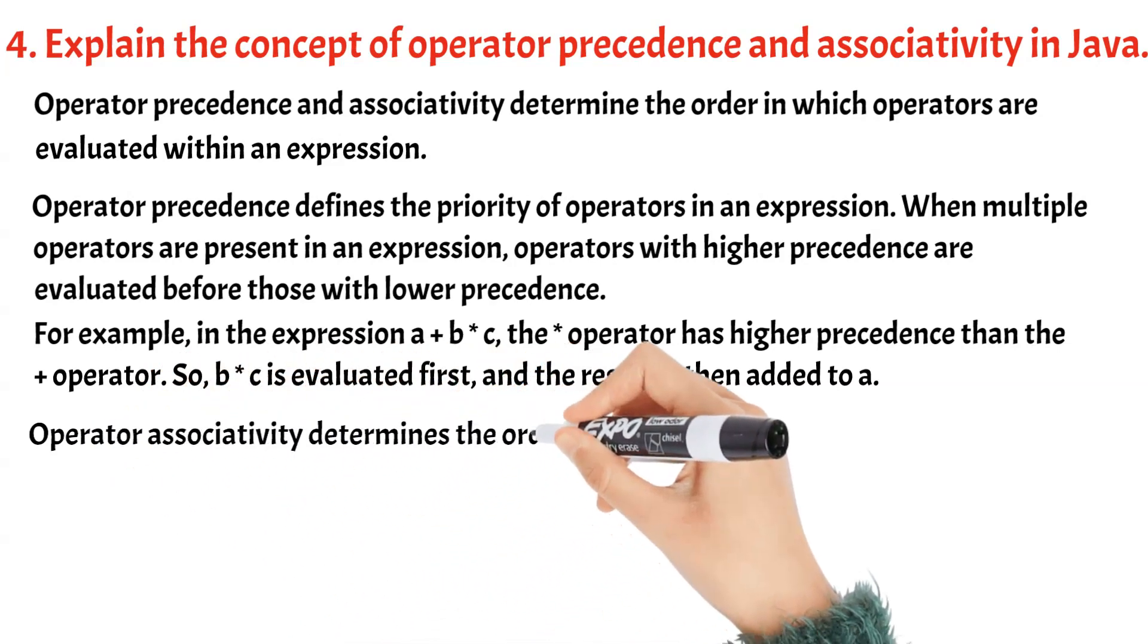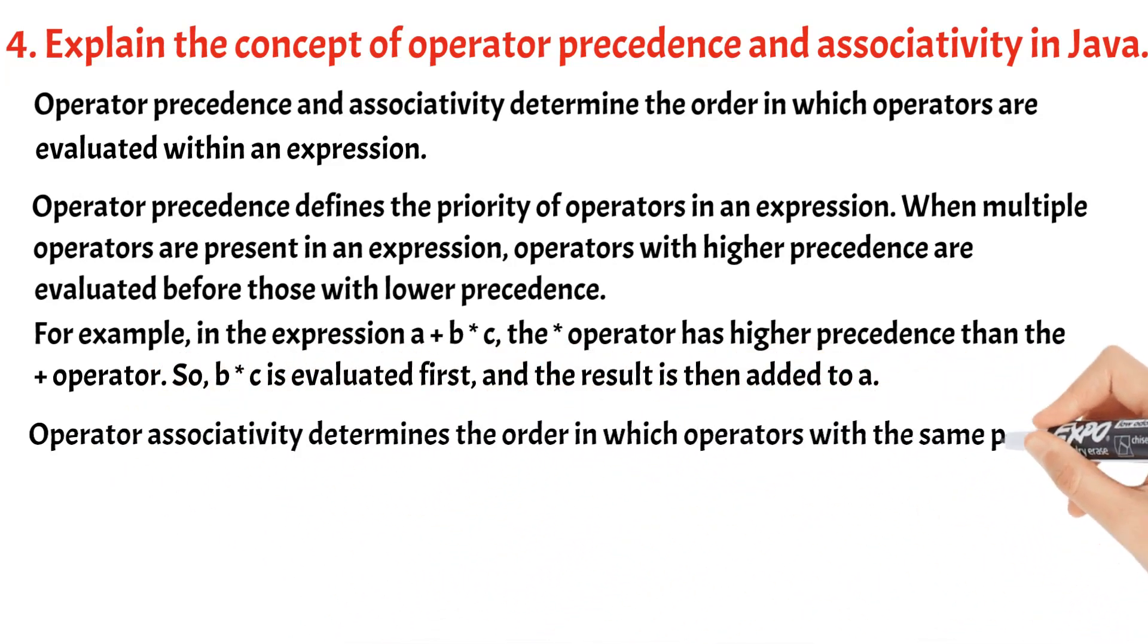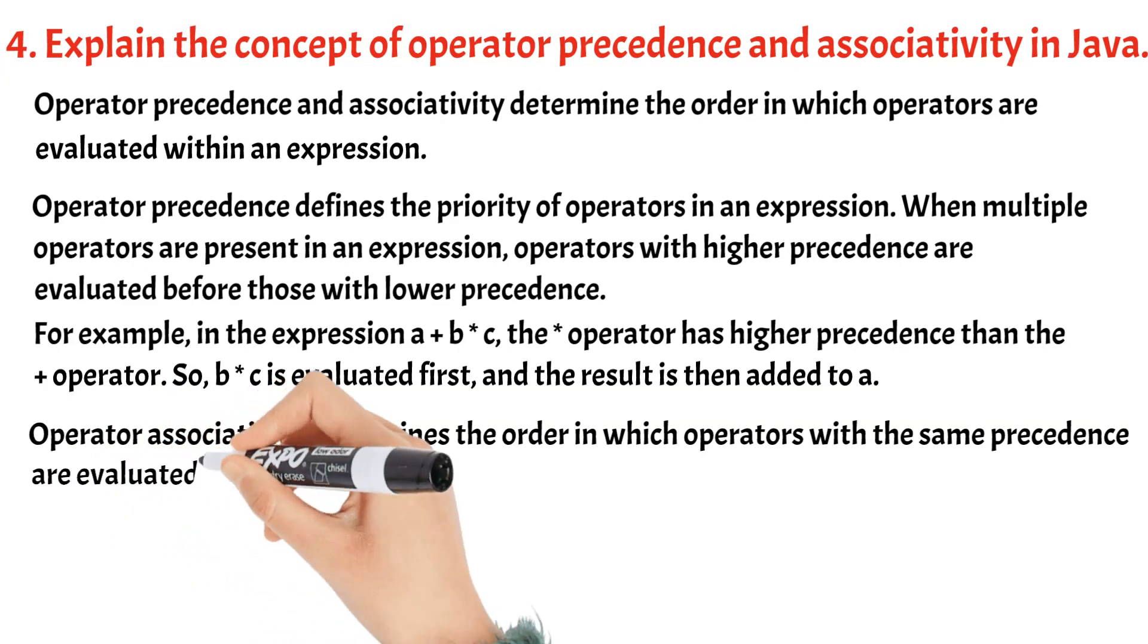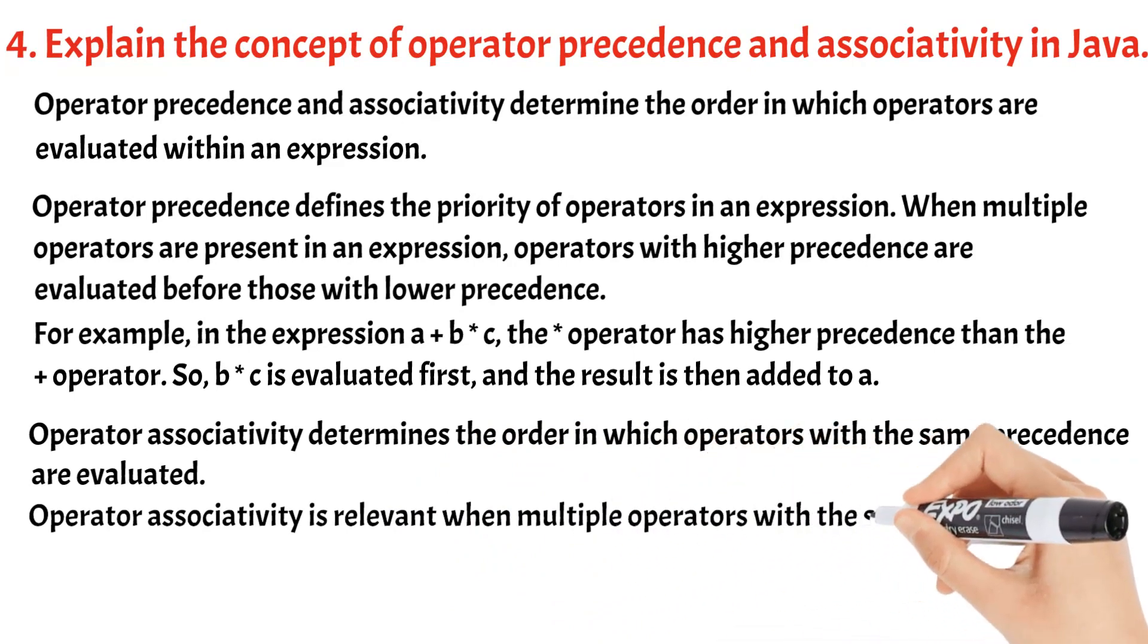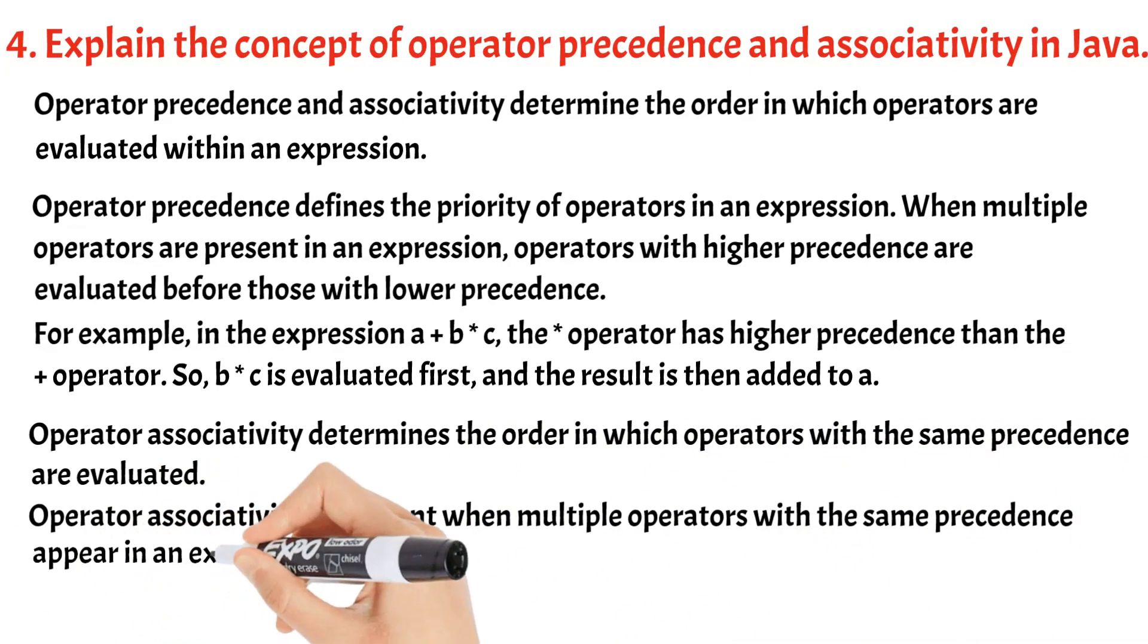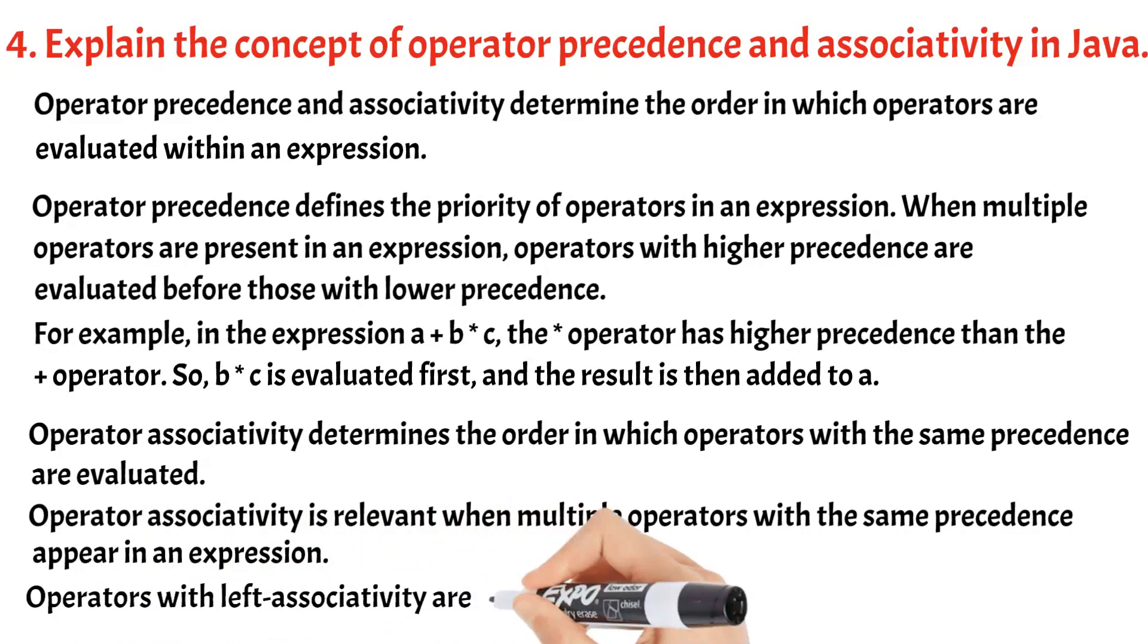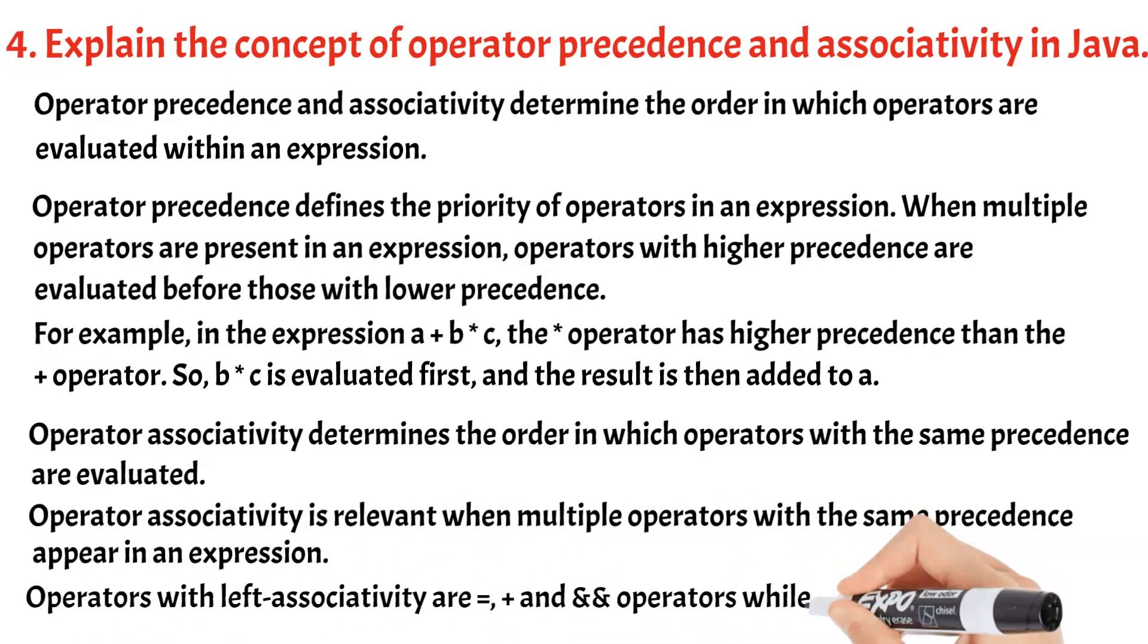Operator associativity determines the order in which operators with the same precedence are evaluated. Operator associativity is relevant when multiple operators with the same precedence are evaluated. Operators with left associativity are equal, plus, minus, and-and, or-or operators while right associativity is for exponentiation.